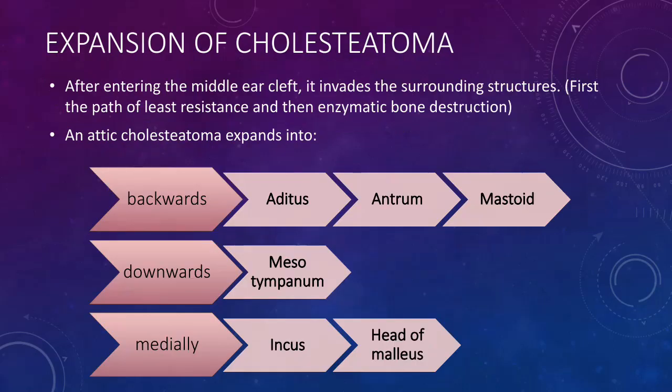Expansion of cholesteatoma. After entering the middle ear cleft, the cholesteatoma invades the surrounding structures. First, it expands through the surrounding structures that have least resistance, and then there is enzymatic bone destruction. A cholesteatoma which is in the attic can expand backwards into the aditus, antrum, and mastoid, downwards into the mesotympanum, and medially to surround the incus or the head of malleus.